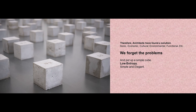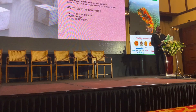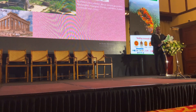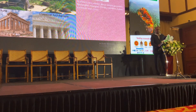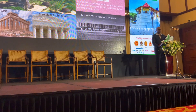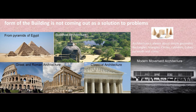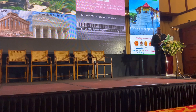And that is what we can see from the beginning of human civilization — from the times of ancient Egypt pyramids, to Buddhist architecture, to Greek and Roman architecture, to classical architecture, and most profoundly in modern architecture: buildings are made out of simple geometric forms. But the thing is, these forms don't come out as a response to a problem — they don't come out as a response to wind flow or sun path. They take such forms because they are rigid geometric forms.